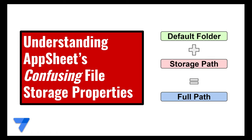First, we're going to start off with an overview of the three components to consider when thinking about file storage. There are two inputs: one is the default folder location, and the other one is the storage path that is saved to your table for your image or file type. Together, those two construct the full path that AppSheet will use to either retrieve or store the image. Keep in mind, retrieval and storage are also independent of each other.